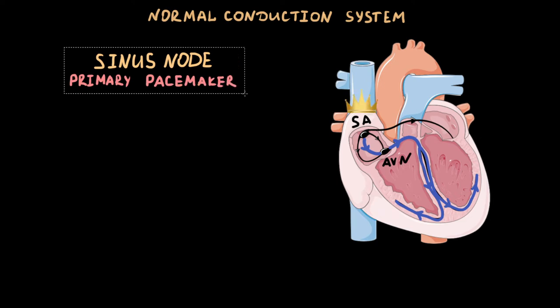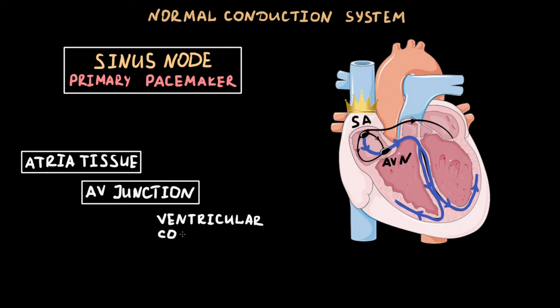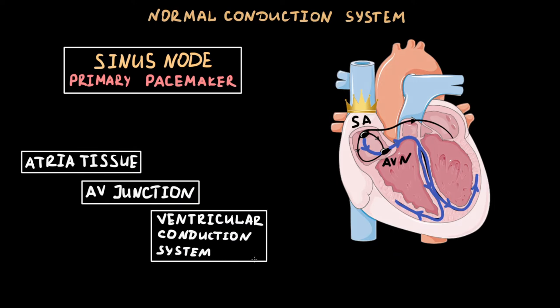In addition, there are other special regions throughout the heart where myocardial cells have a normal intrinsic ability to initiate impulses by automaticity. They include multiple sites in the right and left atria, the atrio-ventricular junction, and the specialized conduction system of the ventricles. These cells are called latent or subsidiary pacemakers.